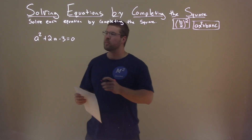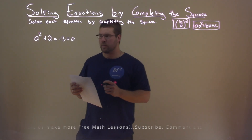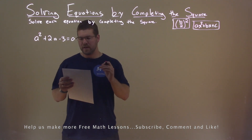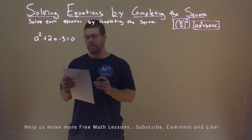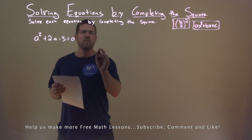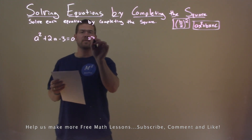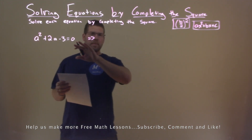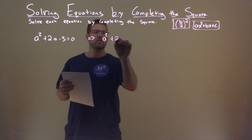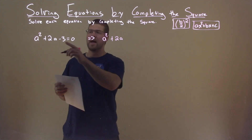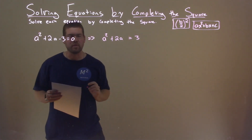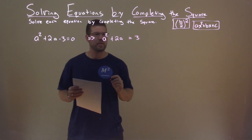We're given this problem right here: A squared plus 2A minus 3 equals 0, and we need to solve this by completing the square. First thing I want to do, let's get it in the form of A squared plus 2A, and we're going to add a 3 to both sides, so that equals a positive 3 right there.